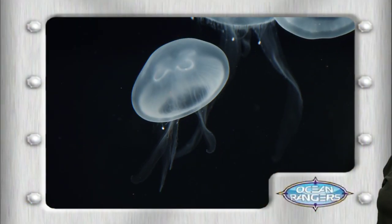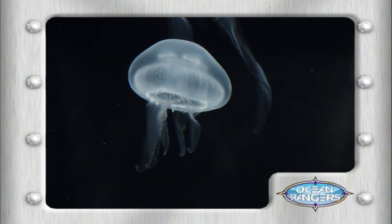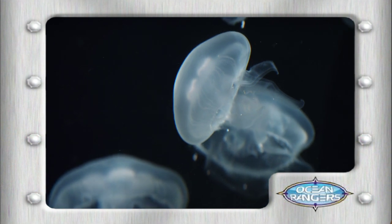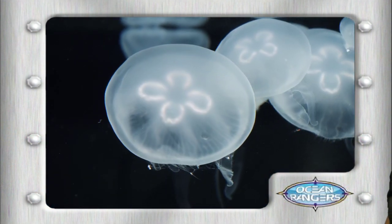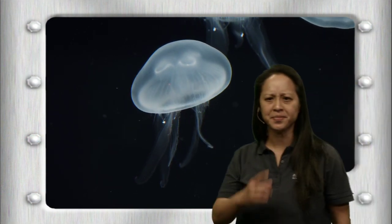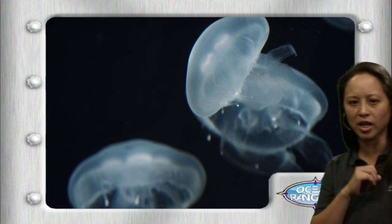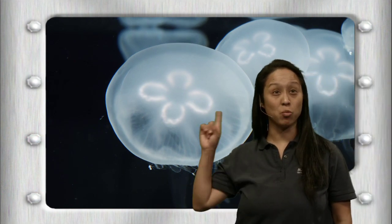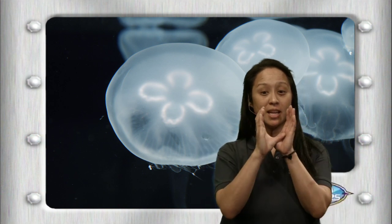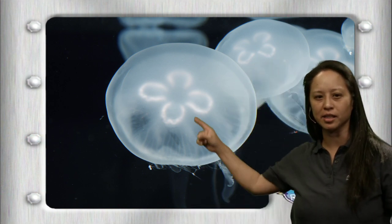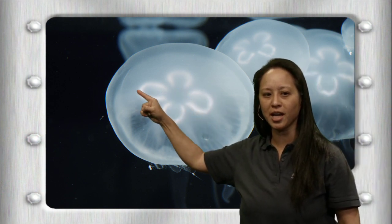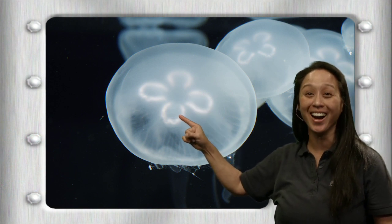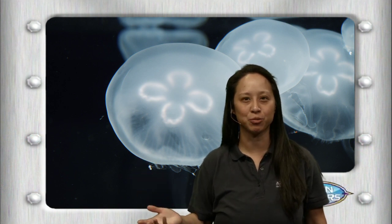Now let's look at the next number on deck and see what you notice. I see a jelly, but take a look at the one jelly - do you notice there's a pattern on it? That pattern is their stomachs. When the jelly turns, how many stomachs does it have? Let's look at their stomachs - the stomach is the U-shaped thing. Let's count them together: one, two, three...